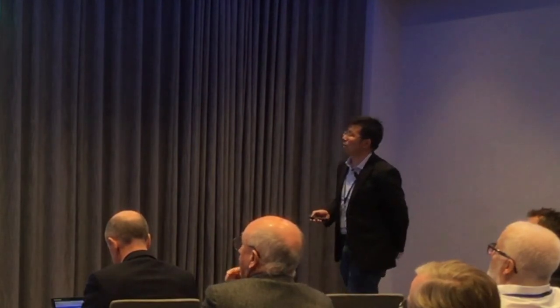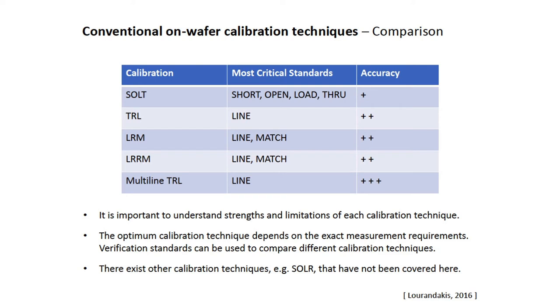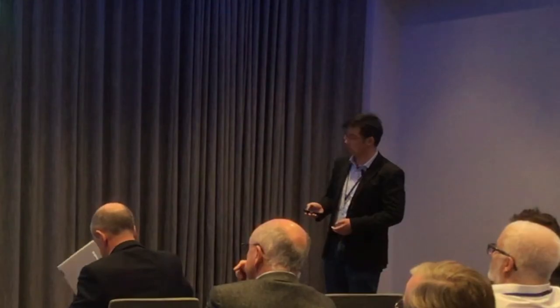Multi-line TRL involves multiple lines used across all frequencies; the varying weights solve the problem of band breaks in conventional TRL. It allows very high-performance calibration of on-wafer standards and has been established as a reference calibration technique for metrology at NPL. However, the downside is it needs large space, and sometimes space is very expensive. This table summarizes these calibration techniques: multi-line TRL provides the highest accuracy with the most critical standard being the line; TRL gives reasonably accurate calibration; for LRM you need to know line and match standards well; and for SOLT you need to know all standards very well.